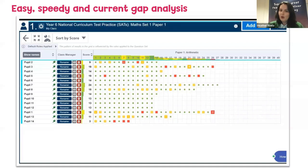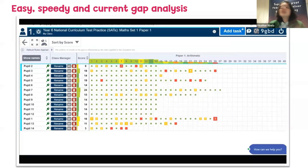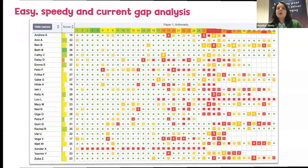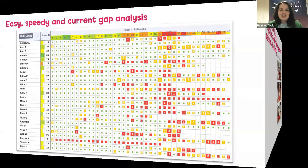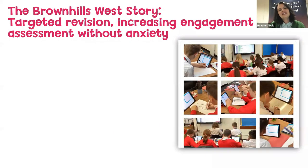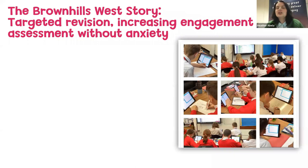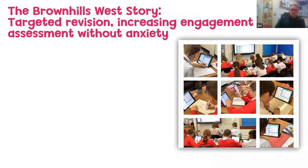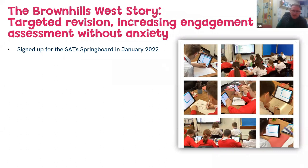Ingredient four is going to be targeted revision. Now we know where the gaps are, we know exactly what we want to be revising. This feeds quite nicely into ingredient five — assessment without anxiety and engaging our reluctant learners. There's no better way to find out how that works than for John to take us into Brown Hills West last year and tell us what happened. We introduced the Springboard in January last year, and we saw impact straight away.